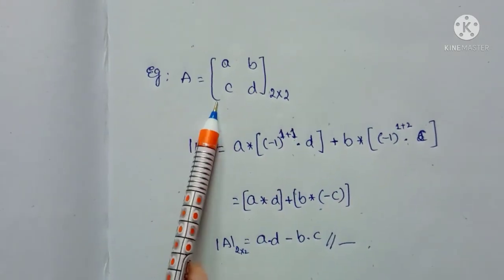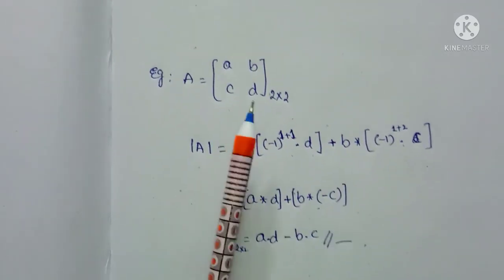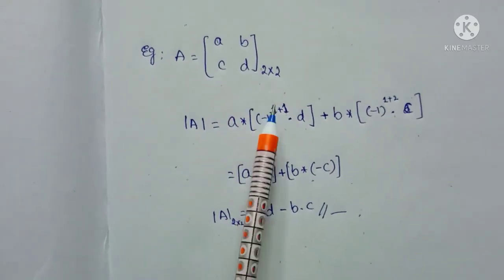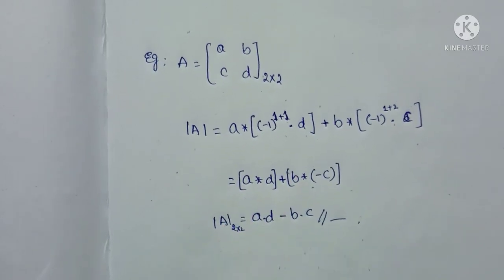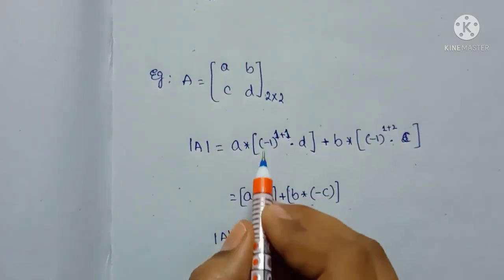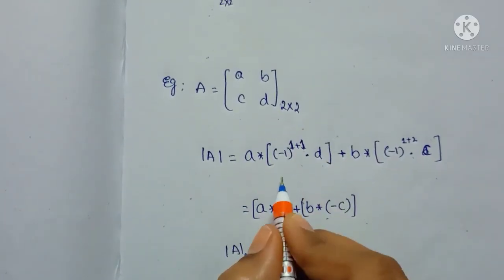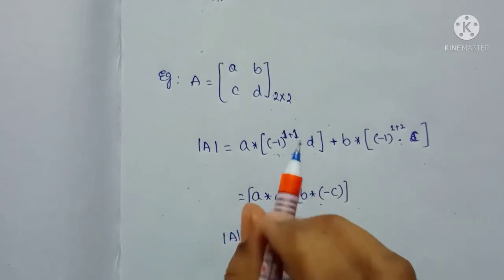If you see the example, A equals [a b; c d], a 2 by 2 matrix. For determining a 2 by 2 matrix, you have to find the cofactor matrix. Cofactor matrix means the minor matrix is multiplied with minus 1 to the power I plus J.